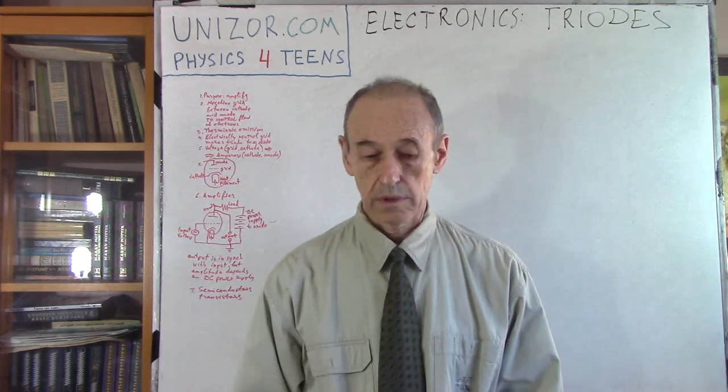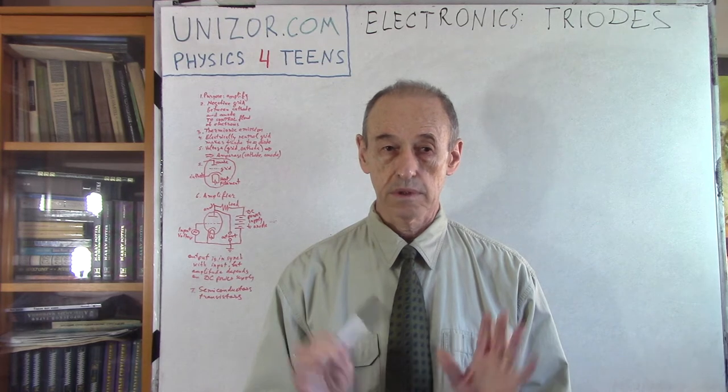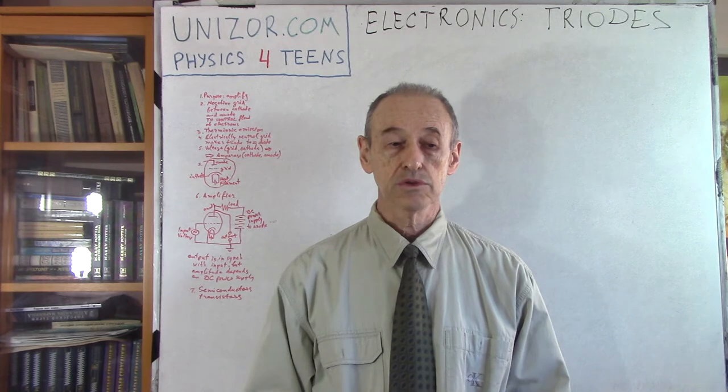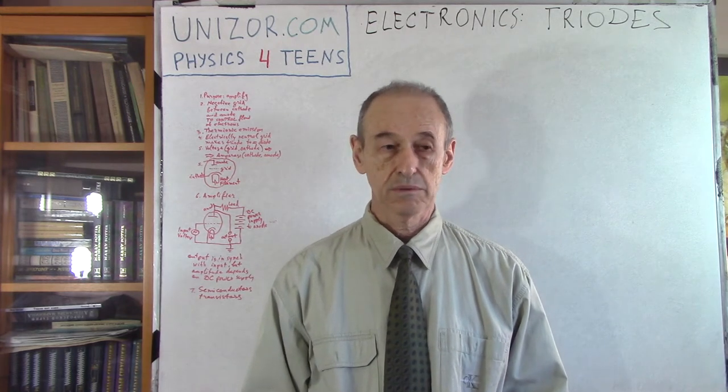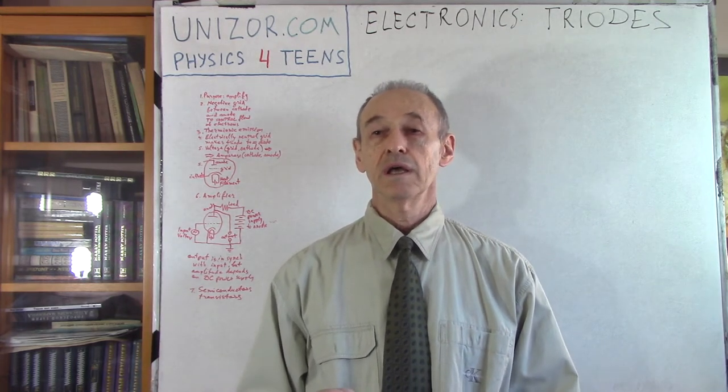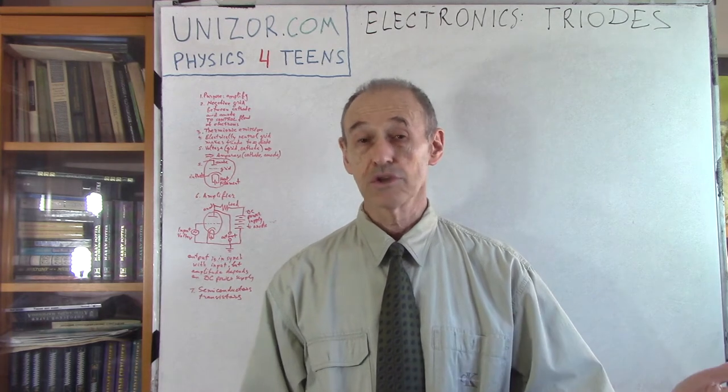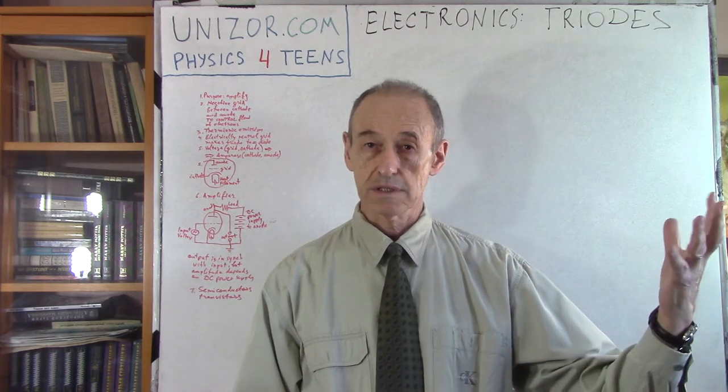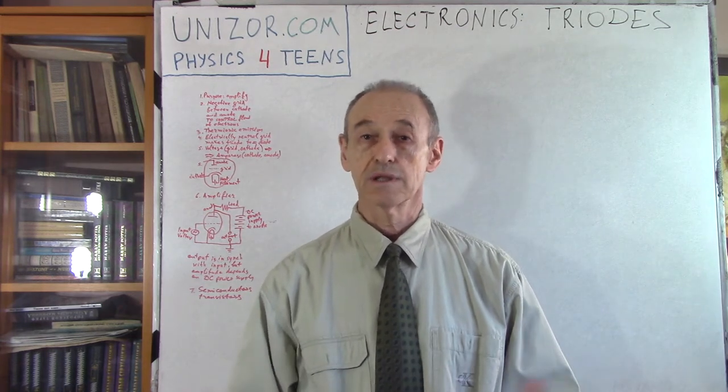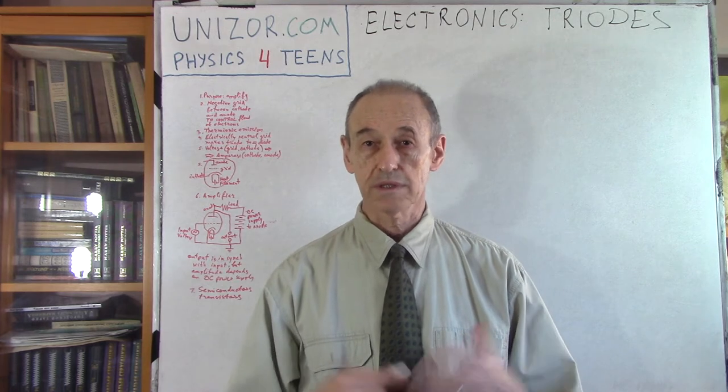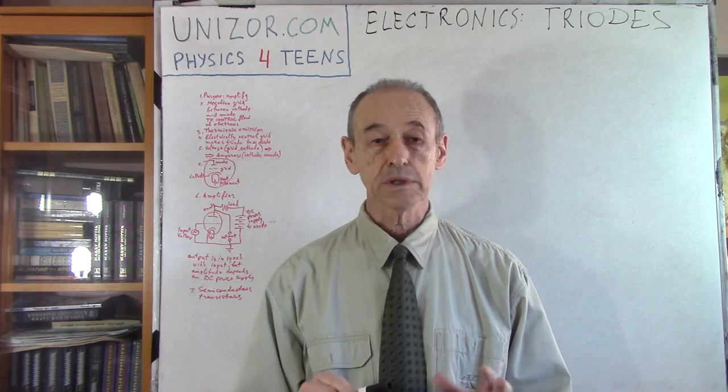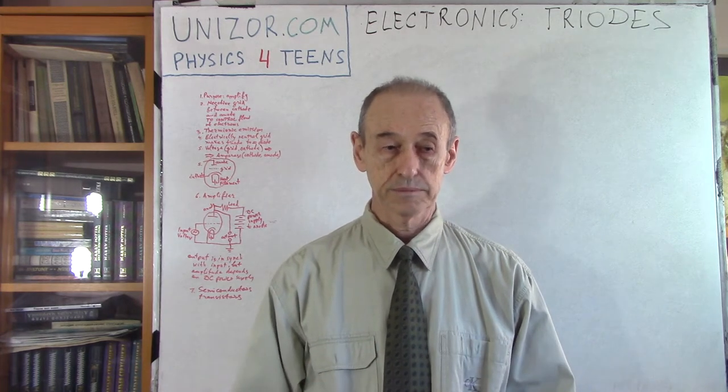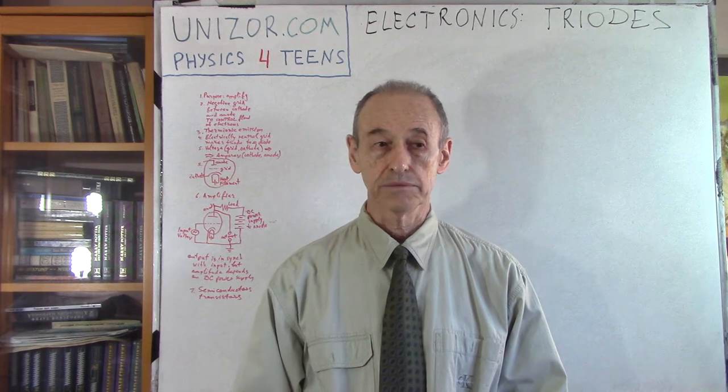So triodes. The main purpose of this device called triode is to amplify signals. Amplification is definitely needed for radio, for instance, when a very weak signal is caught by antenna and you want to amplify it. We will talk about how this particular device is made, arranged, and the principle of its work.